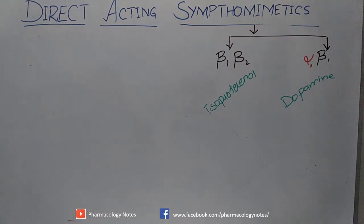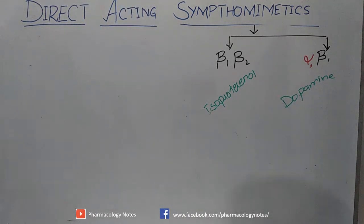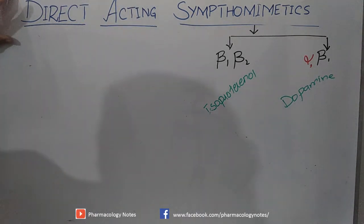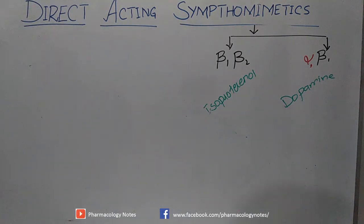Sympathomimetic drugs are all those drugs which mimic the action of the sympathetic nervous system, and direct-acting drugs act directly on receptors. We have already discussed epinephrine, norepinephrine, and dopamine.